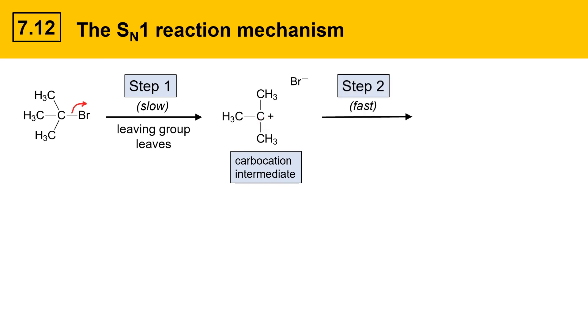In the second step, which is the fast step, the nucleophile is going to attack. So here, a pair of electrons on our nucleophile, which in this case is methanol, is going to attack the carbocation carbon.